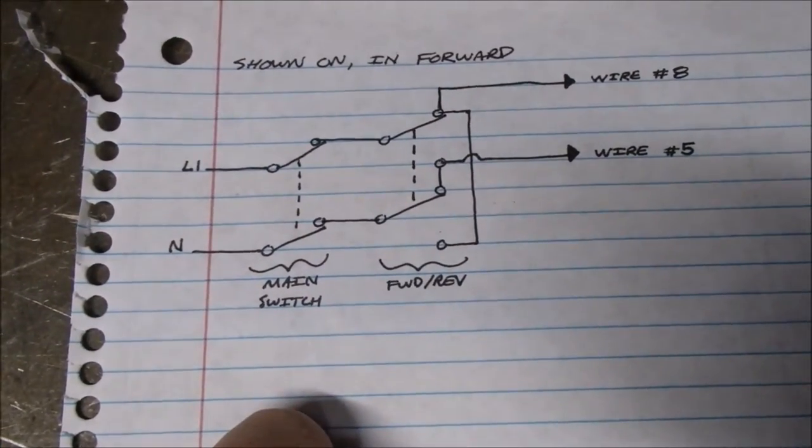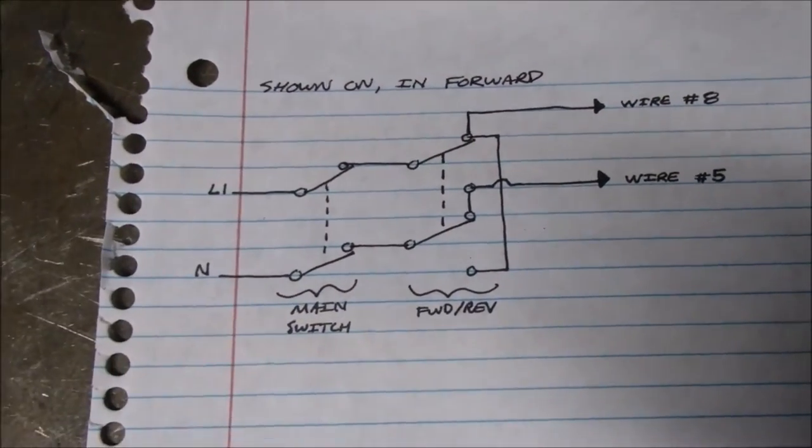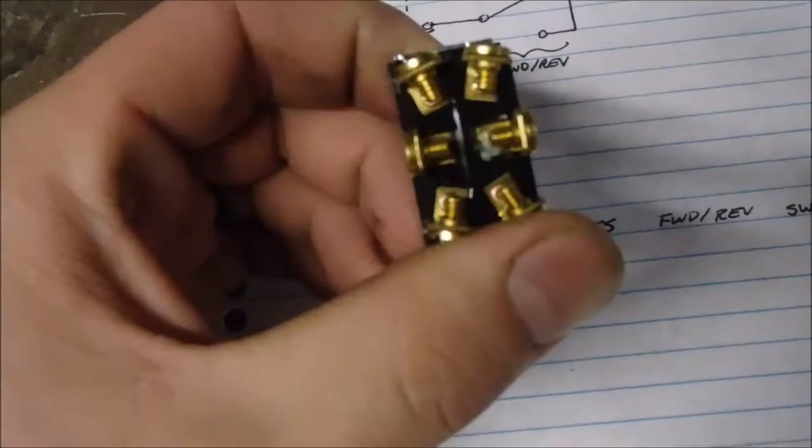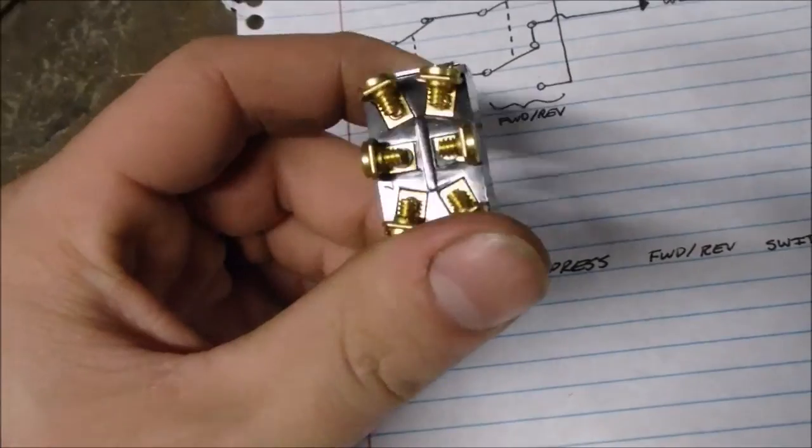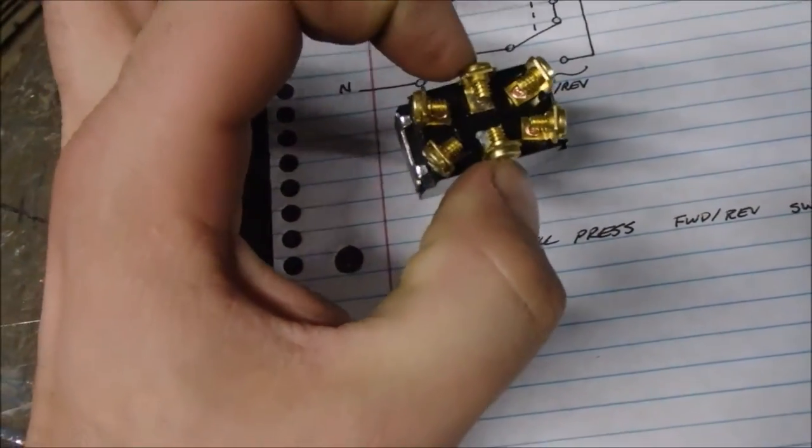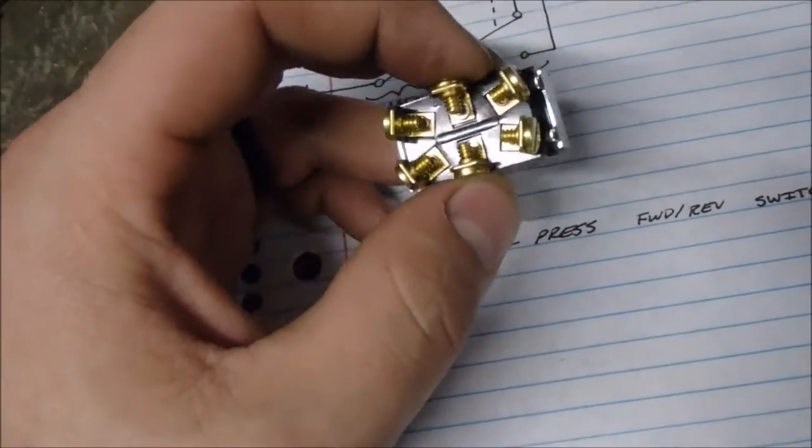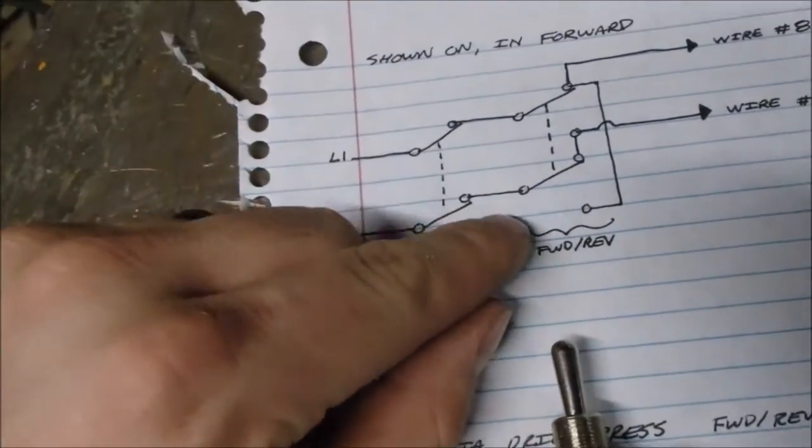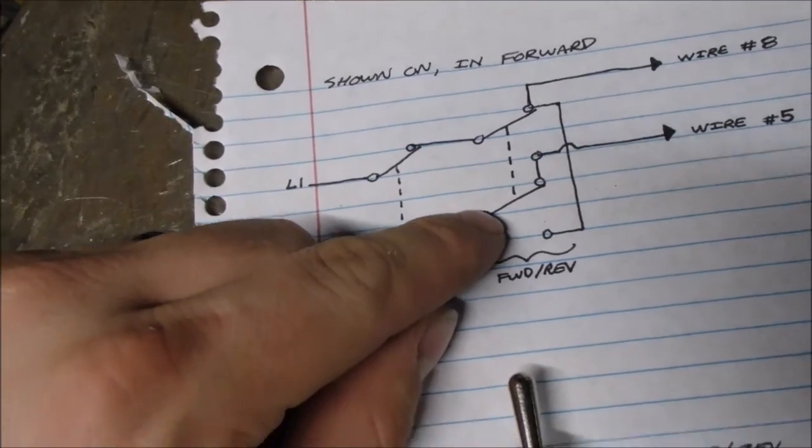I'll show you the switch real quick and show you how that works. You've got six terminals on here. The two in the center, on this particular switch - your switch may be different - the center ones are the common. When you switch it in the middle, it's not connected to either one.